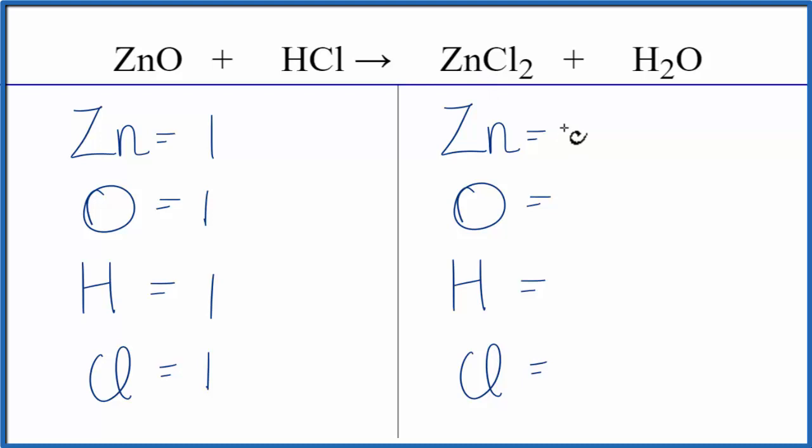On the product side, we have zinc one, oxygen one, two hydrogens, and then two chlorines.